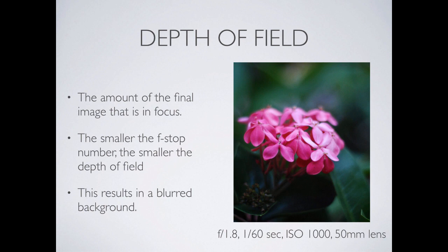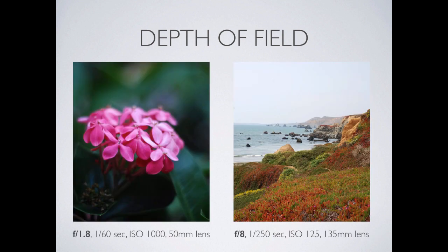Here's an example: at f1.8, a really big aperture, for 1/60th of a second, just a little bit of the flower is in focus and everything behind it goes blurry really fast — very thin depth of field. If we were taking a picture of a landscape like the California coast, we'd use f8, a much smaller aperture, because we want everything — the stuff in front, middle, and far away — all in focus. So depending on what we're trying to shoot, we vary the aperture.